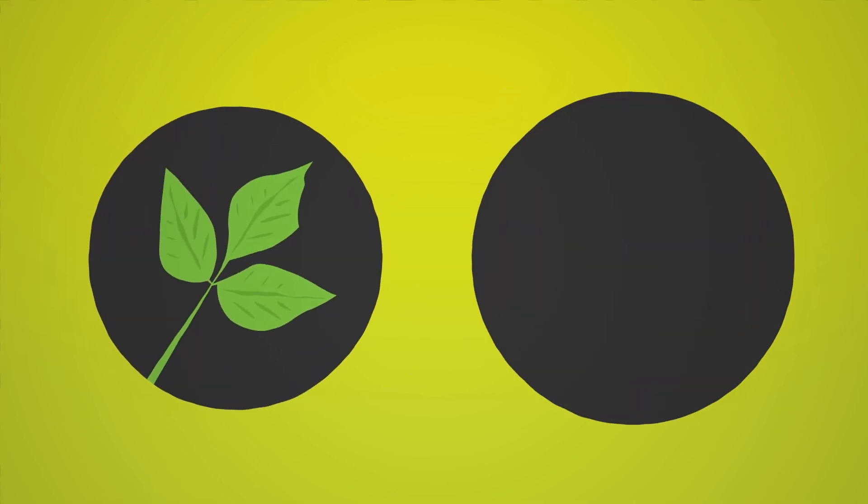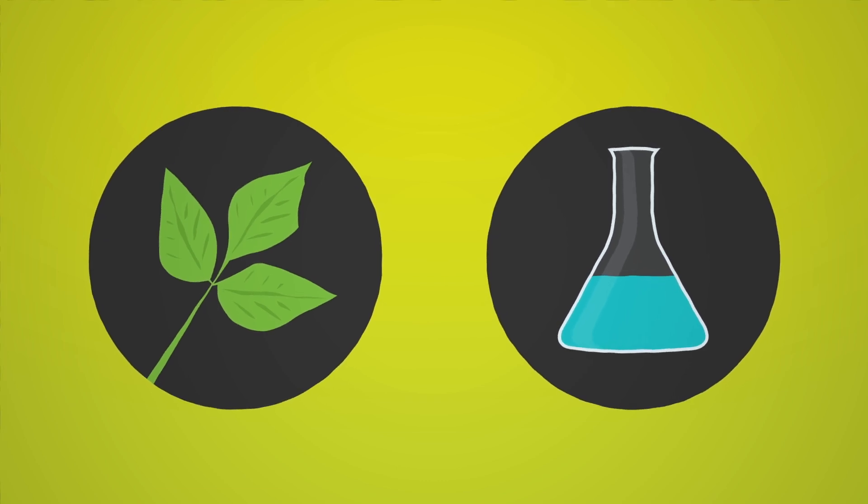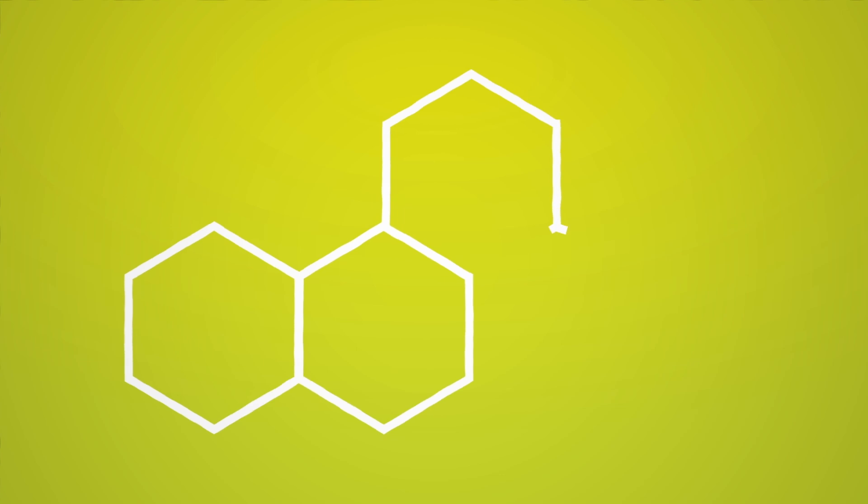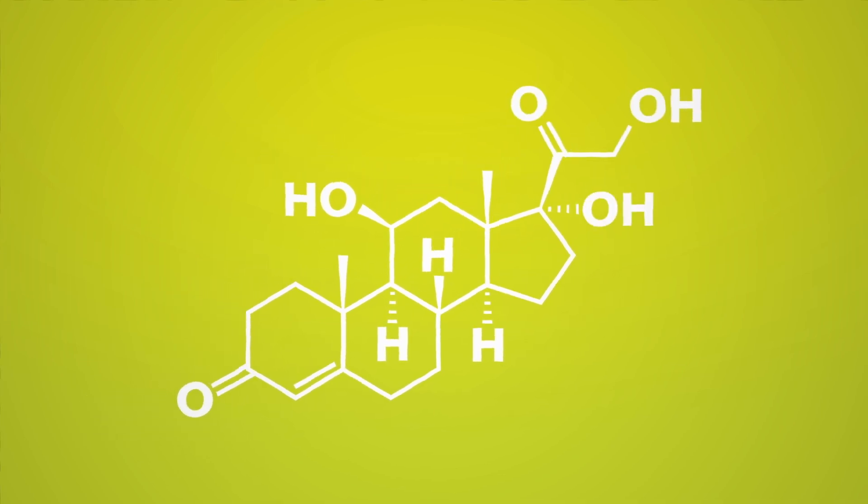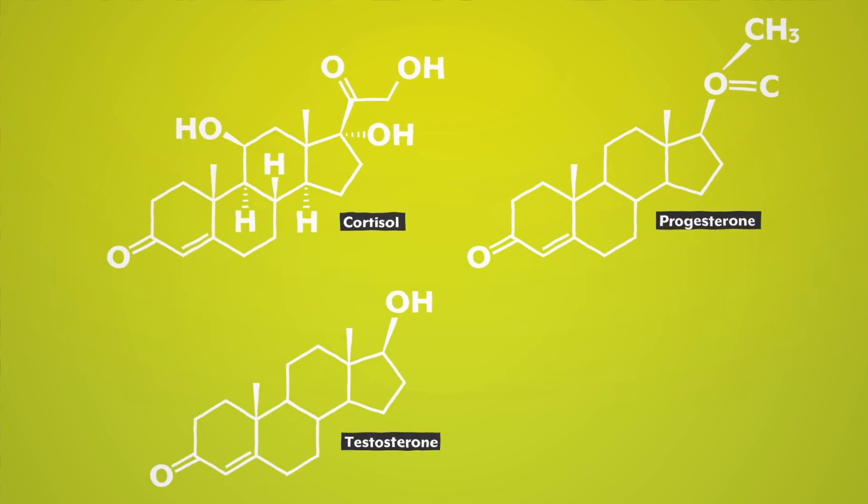Steroids can be naturally occurring or synthetic, but what all steroids have in common is a molecular structure that consists of a base of four rings made of 17 carbon atoms arranged in three hexagons and one pentagon. A molecule must contain this exact arrangement to be a steroid, though most also have side chains—additional atoms that can dramatically impact the molecule's function.